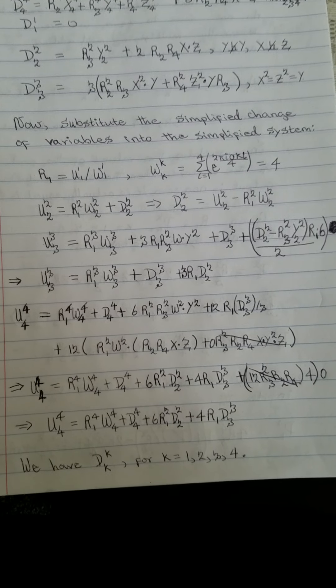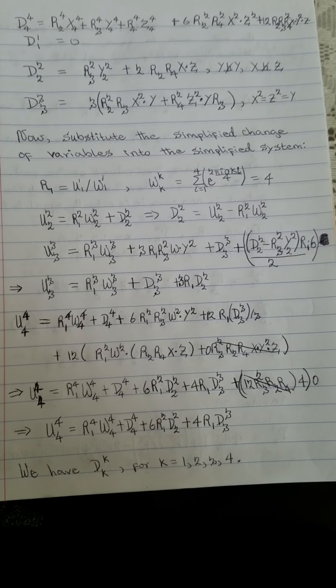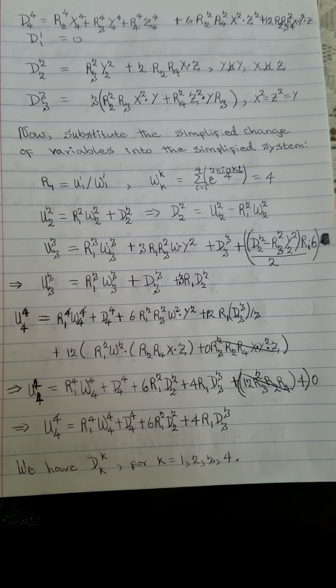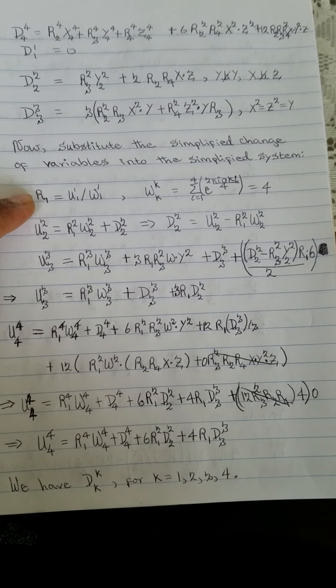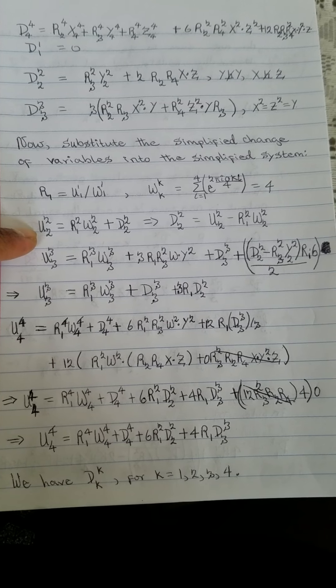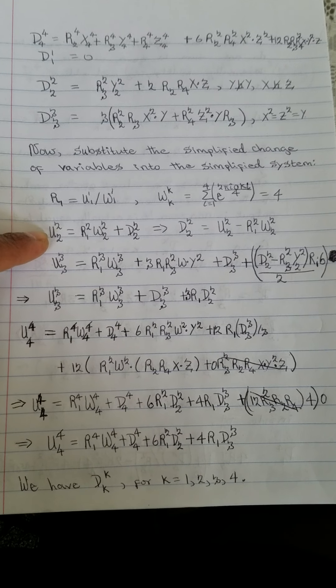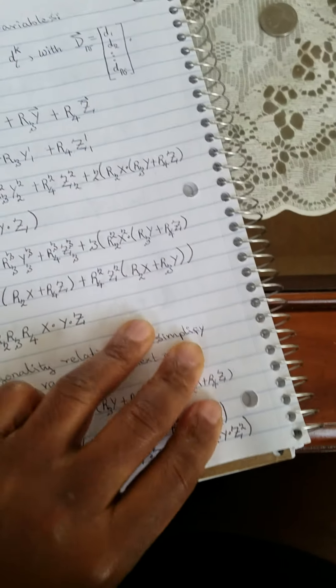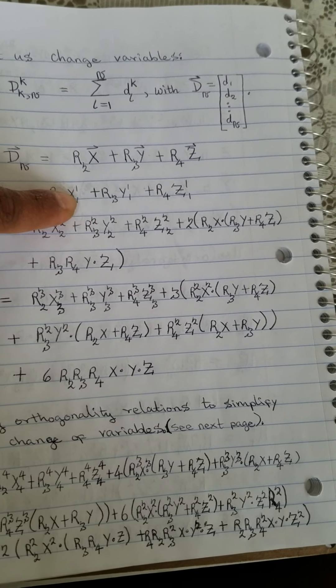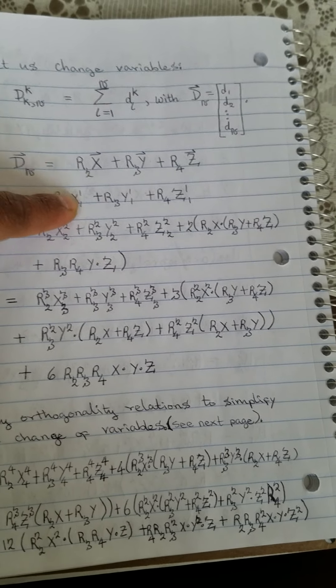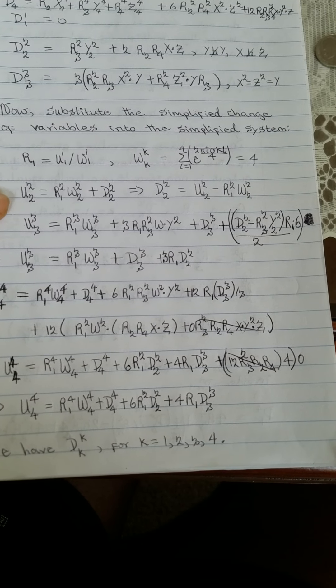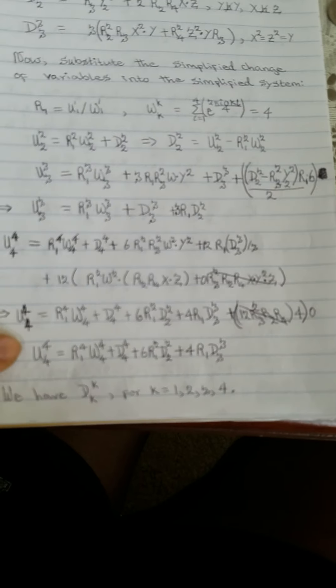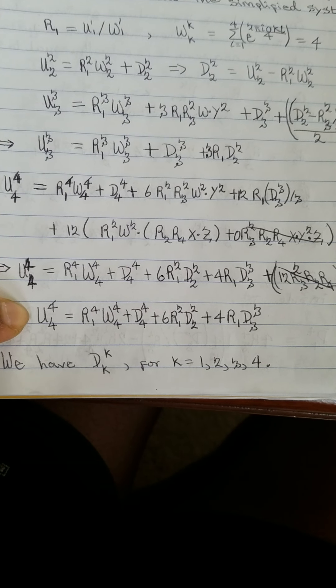When we start substituting back into the original problem, you notice that r1 is already defined and we can use it to define d22. I'm not including d11 here because it's already shown to be 0 by definition, because x sums to 0, y sums to 0 and z sums to 0. So here we can find d22 and we can proceed to find d33 and likewise we can get d44.